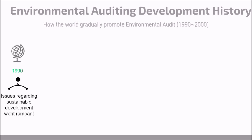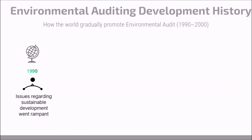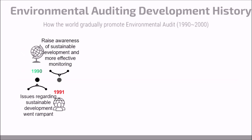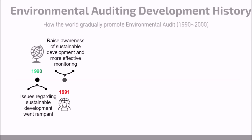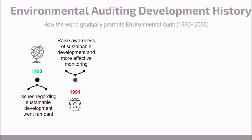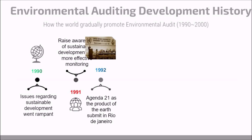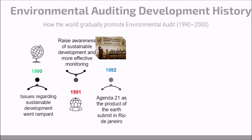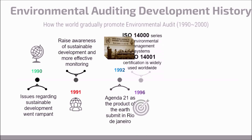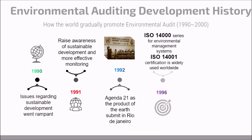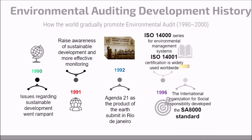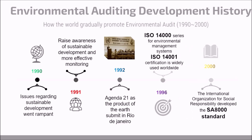In 1990, issues regarding sustainable development went rampant. In 1991, there was raised awareness of sustainable development and more effective monitoring. In 1992, Agenda 21 was the product of the Earth Summit in Rio de Janeiro. The ISO 14001 series for environmental management systems and ISO 14001 certification became widely used around the world in 1996. In 2000, the International Organization for Social Responsibility developed the SA8000 standard.